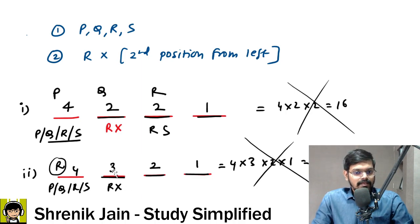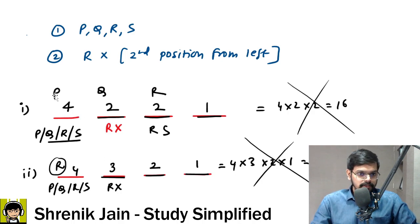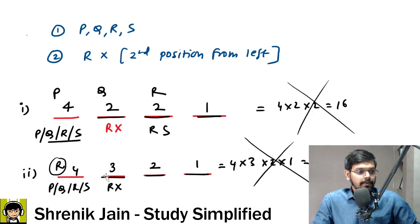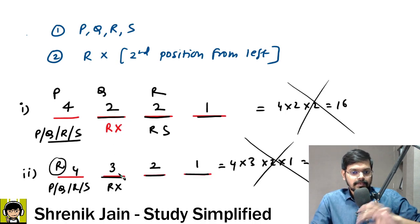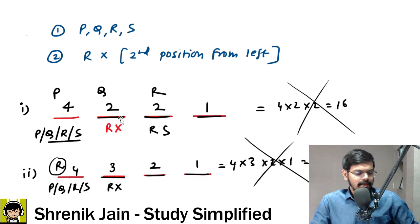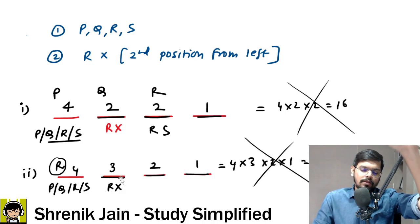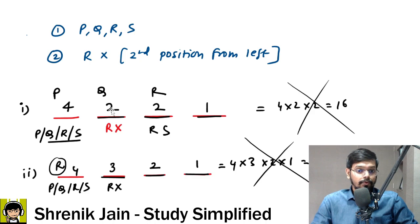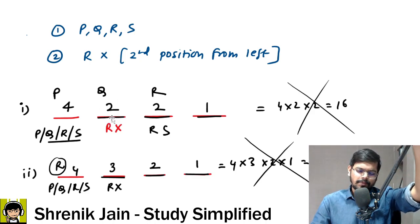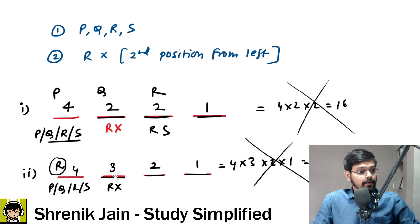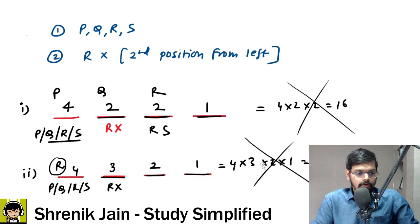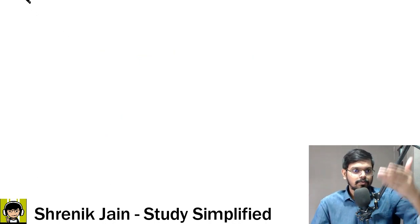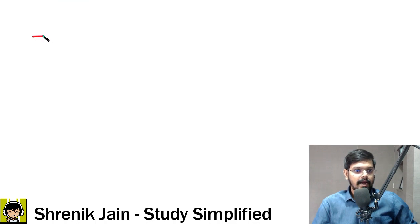Why is 24 wrong? When P is in the first position, there are only two possible ways to fill the second position. But when R takes the first position, there are three possible ways for the second position. So the second position keeps changing as per the scenario — that's the culprit. It changes per scenario, so we must take all scenarios separately.